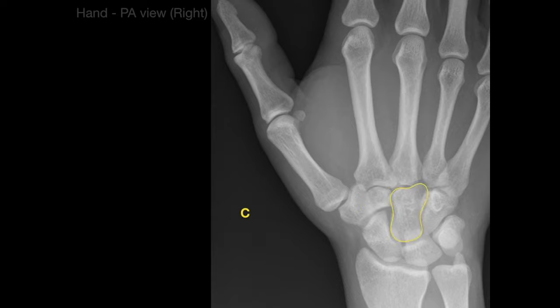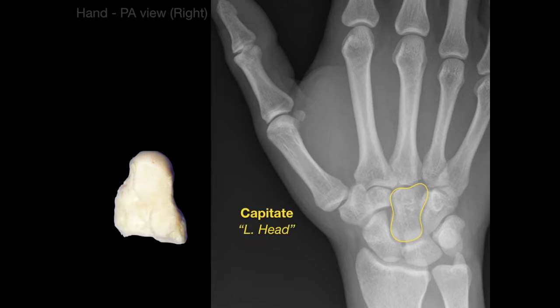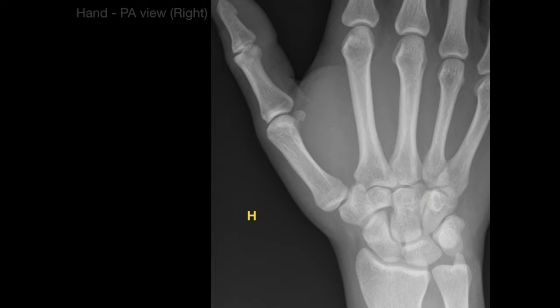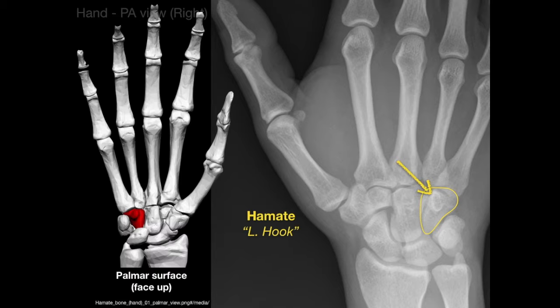C is for capitate, because capitate is Latin for head — there is the capitate bone, and if you look at it, it kind of looks like a head. The next bone is the hamate, which is Latin for hook, because that small structure is called the hamulus, or hook, of the hamate.